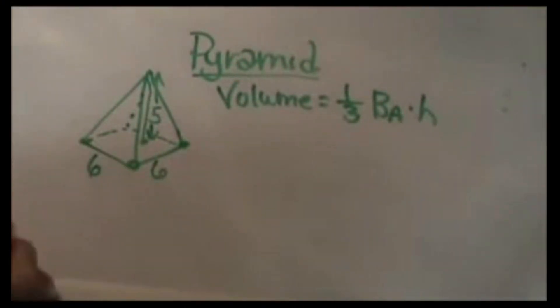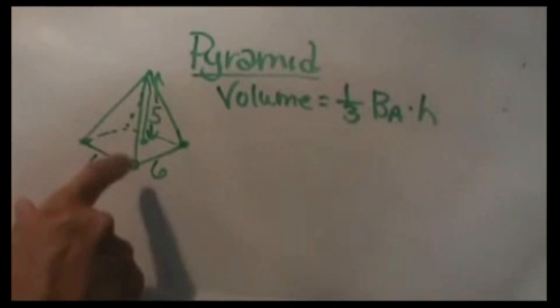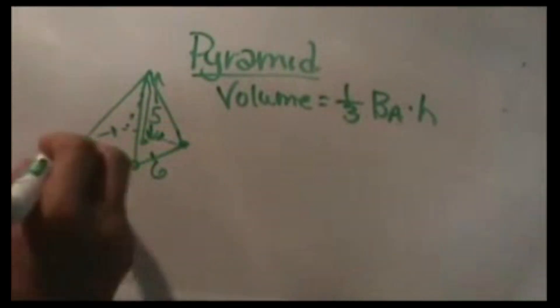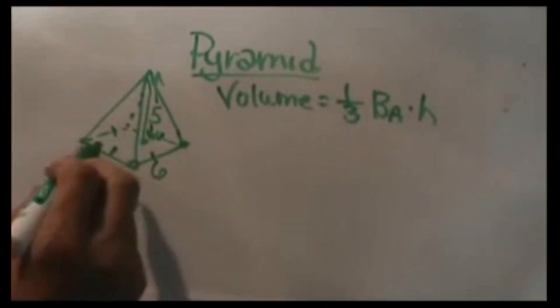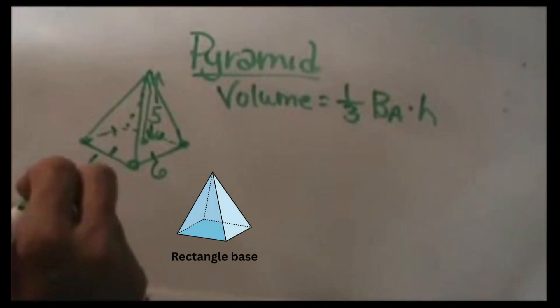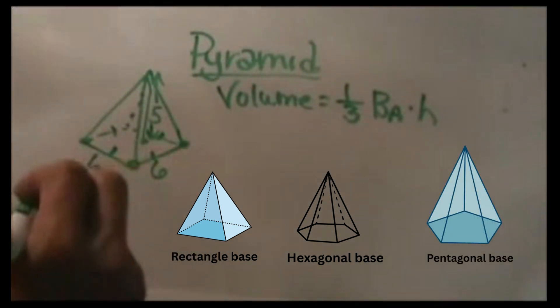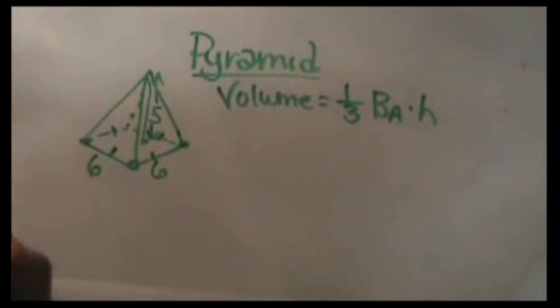Pyramids can take many forms. I've actually got down here a square pyramid and it's defined based on the shape of the base. These four sides are all six so I have a square pyramid. I can also have a rectangular pyramid, a hexagonal pyramid, a pentagonal pyramid, and so on. So look at the base and decide what it's called.